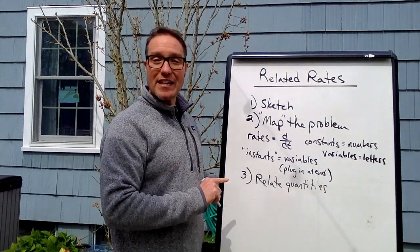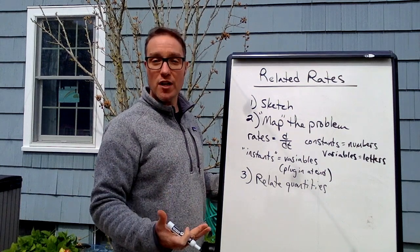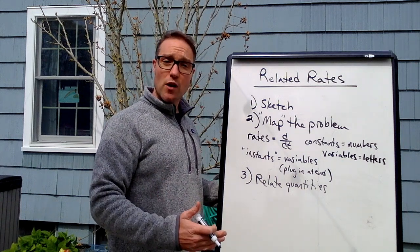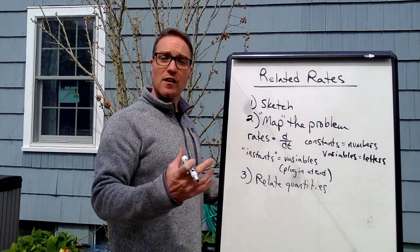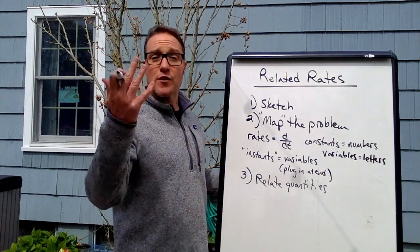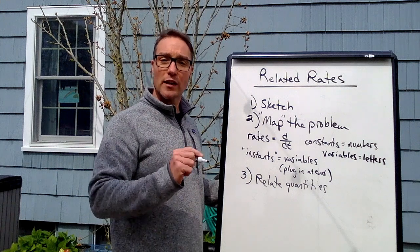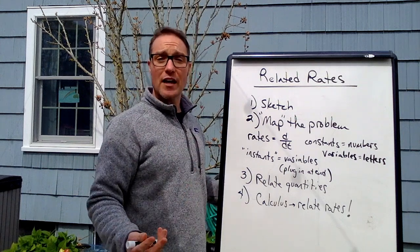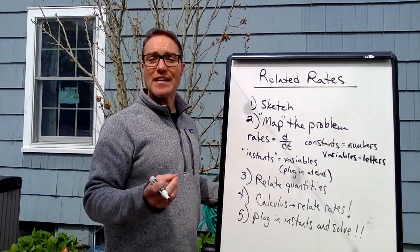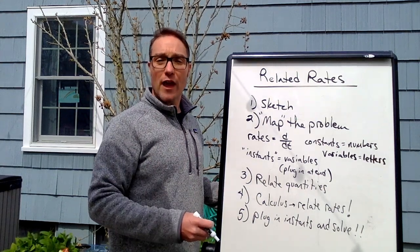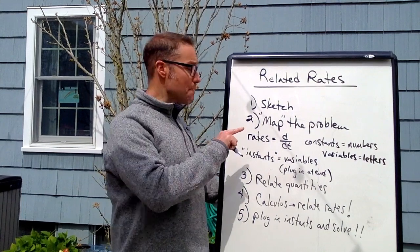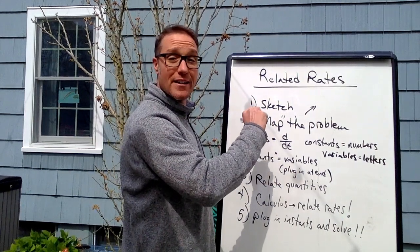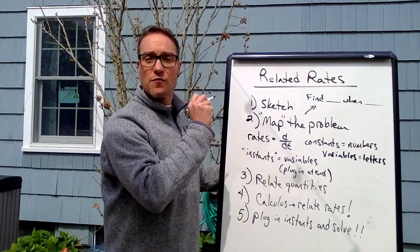Here comes step three: relate the quantities. Come up with one or two equations to relate the quantities in the problem. They're usually a formula from geometry, like a² + b² = c² (Pythagoras), or volume of a sphere, area of a triangle, surface area of a cube — a geometric formula that relates the quantities, or they'll give it to you. Step four, my favorite step: use calculus to relate the rates. Take the derivative of both sides of your equation. The final step is to plug in the instantaneous data and solve for whatever they're asking for. A good habit is to remind yourself what you're trying to solve for and at what instant — write a sentence that says 'find blank when blank.'